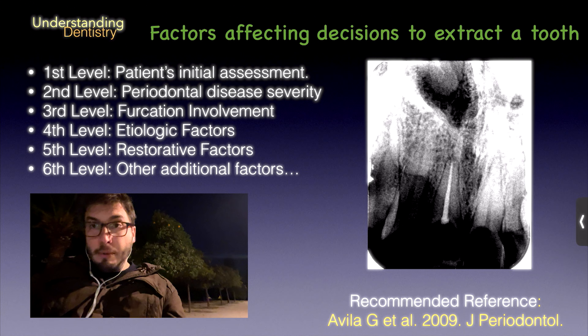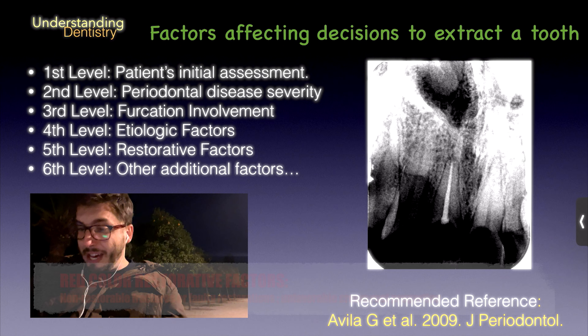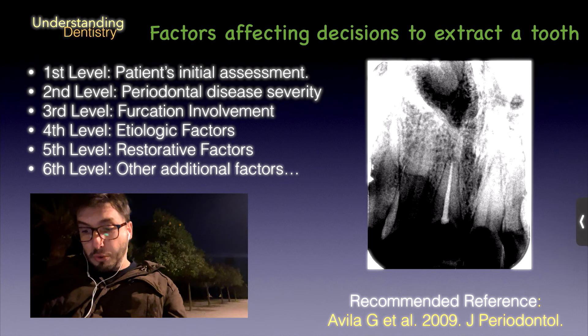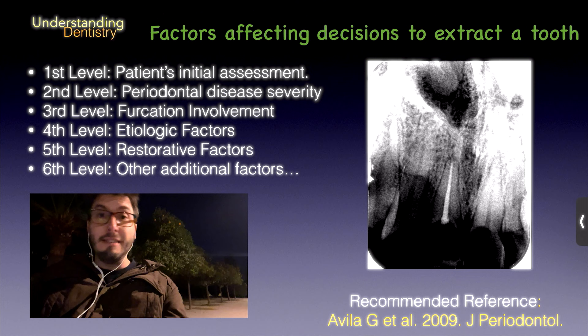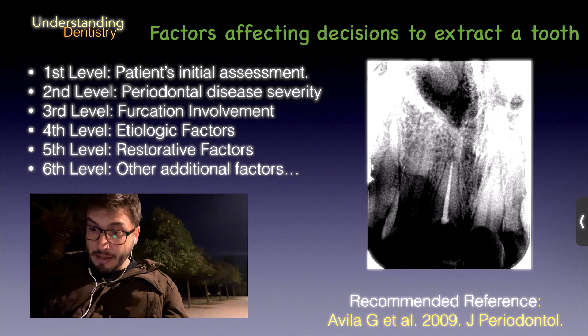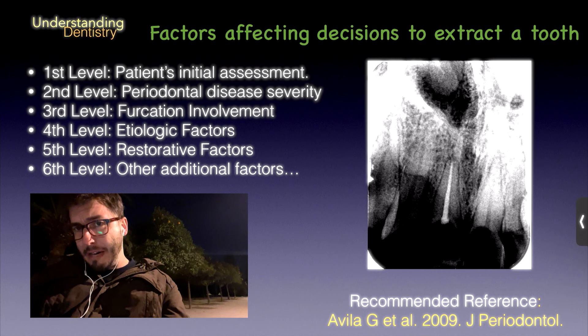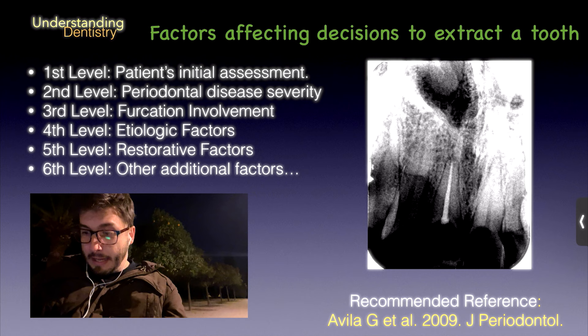The fifth level covers restorative factors. Faulty restorations or fractures — if non-restorable, it is red. Extensive caries is yellow. Crown-to-root proportion less than one-to-one is unfavorable and red. If a post and core is required, that already adds a yellow color, highlighting how important the presence of posts is — because the long-term prognosis of teeth with posts is shorter than for teeth without posts. Additional determinants described by the authors include smoking, systemic conditions, use of bisphosphonates, and the clinician's skill, all of which can affect results.